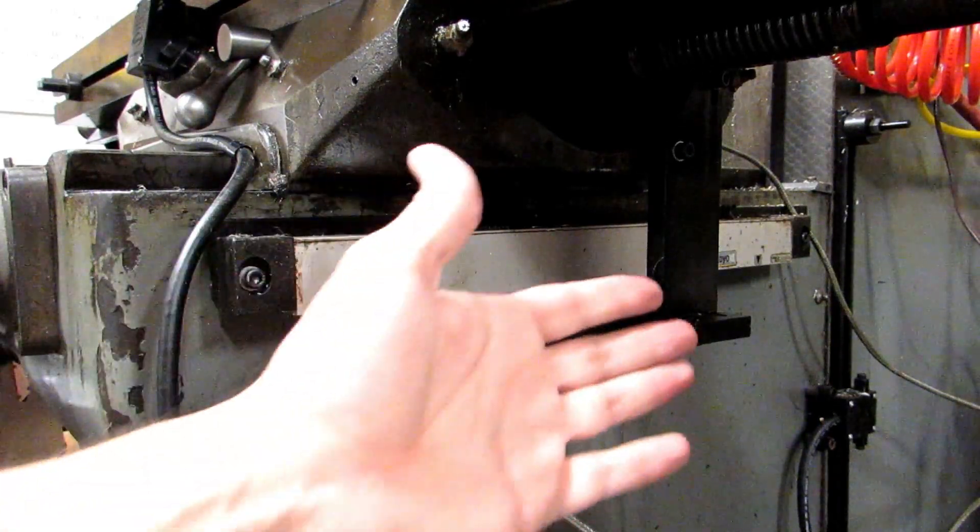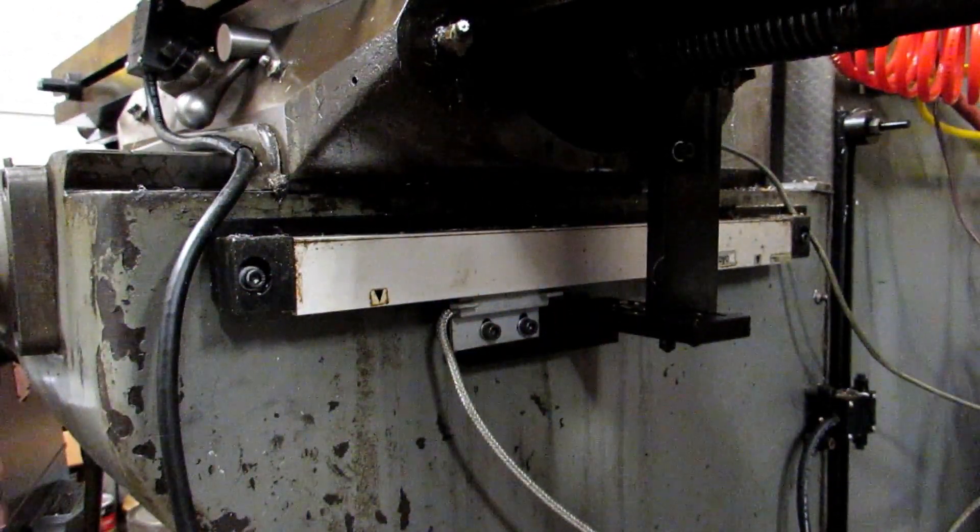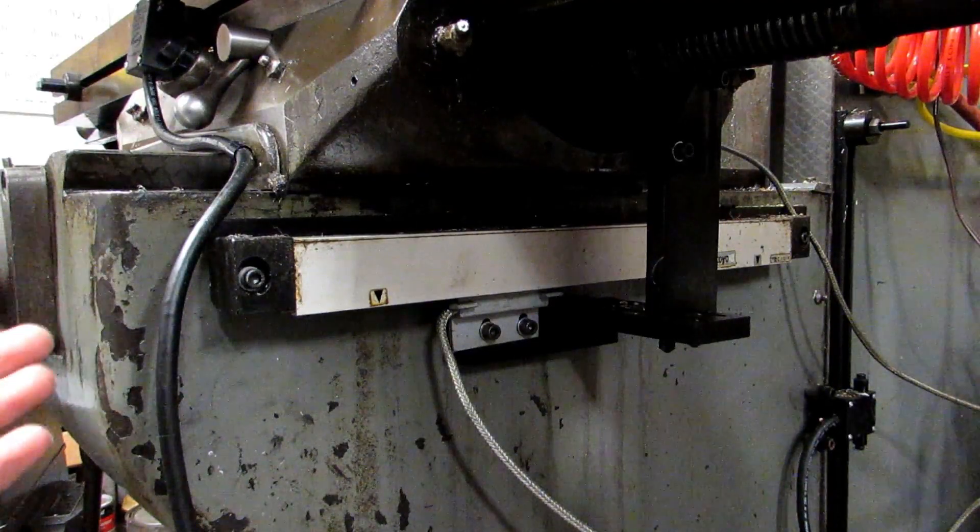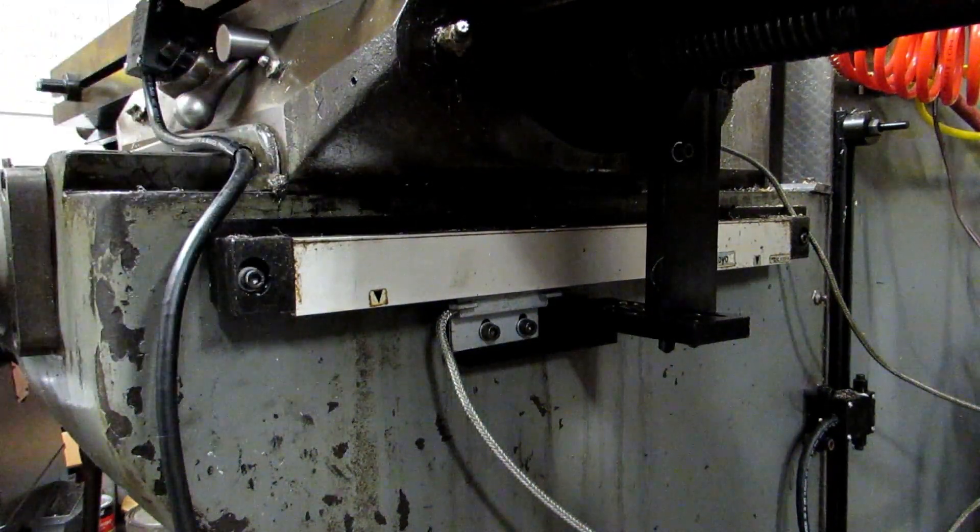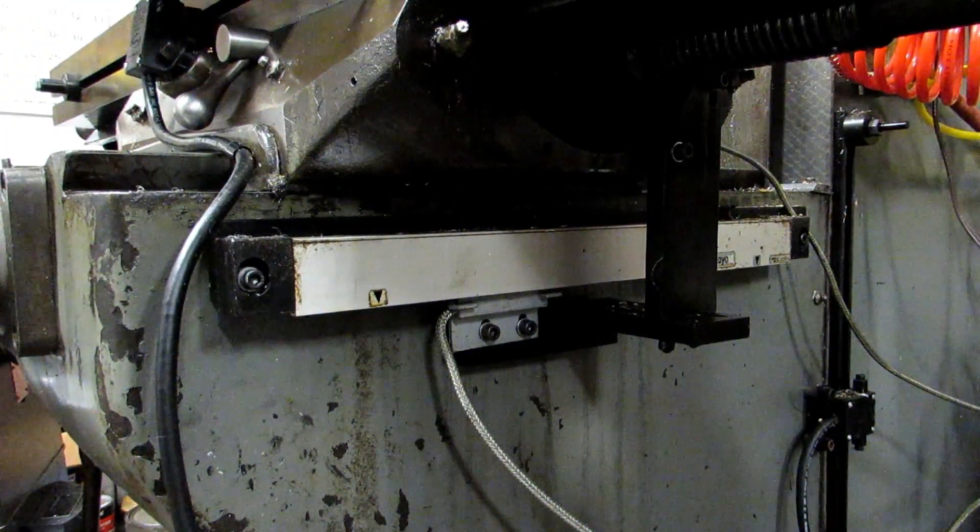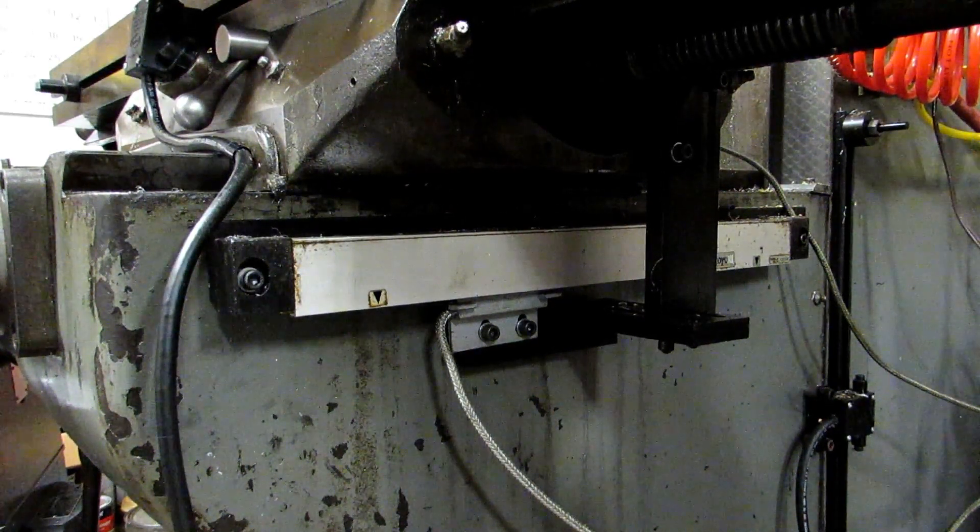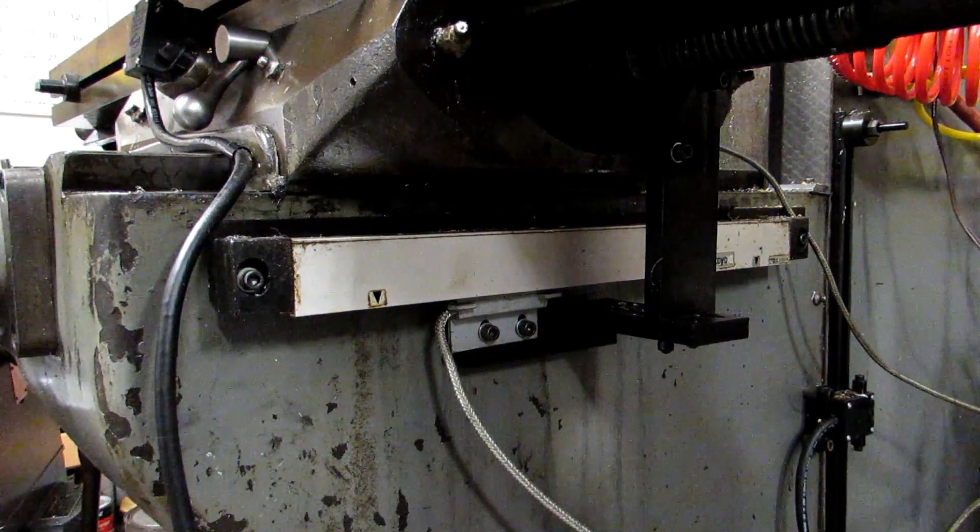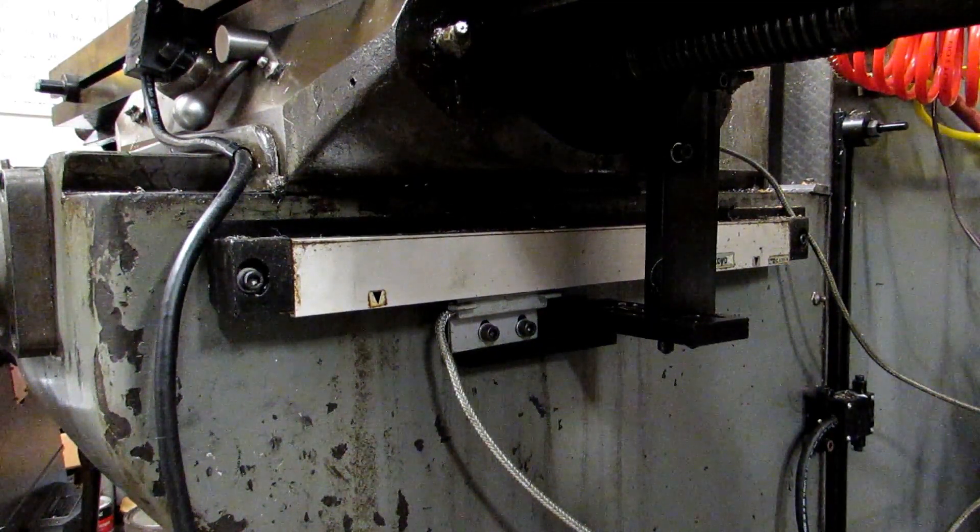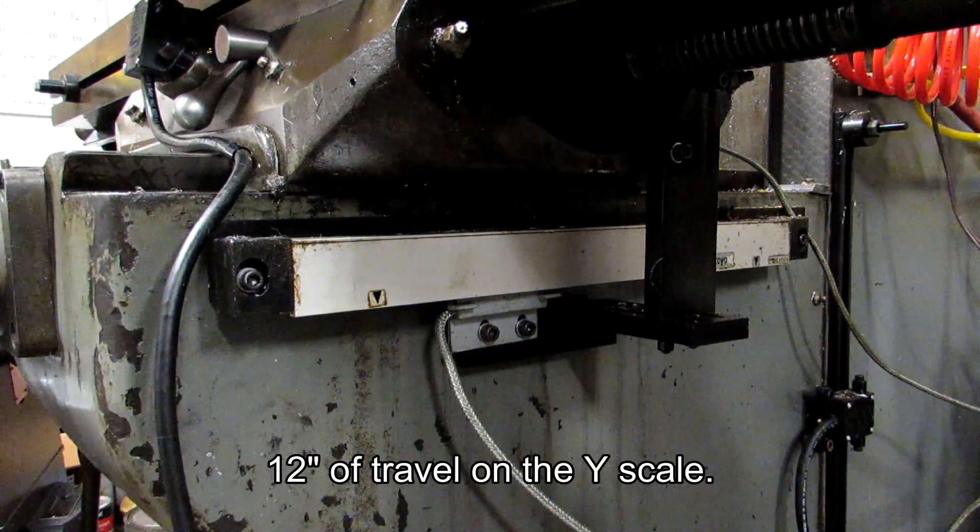Likewise when we're talking about the y-axis of the machine you've got the length of the dovetail of the knee minus the width of the saddle here. Now in my case Bridgeport actually put out two different knees. They have the regular knee which I think only had nine inches of travel and then I happen to have the 12 inch knee so I have 12 inches of travel.